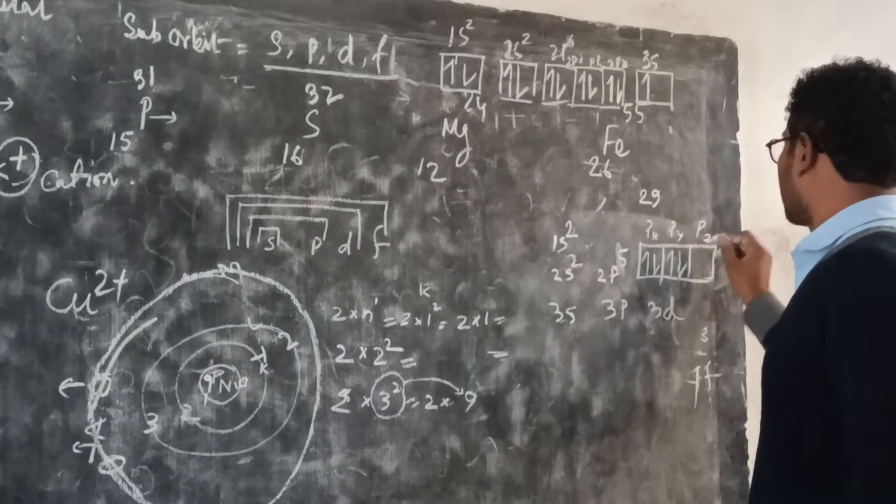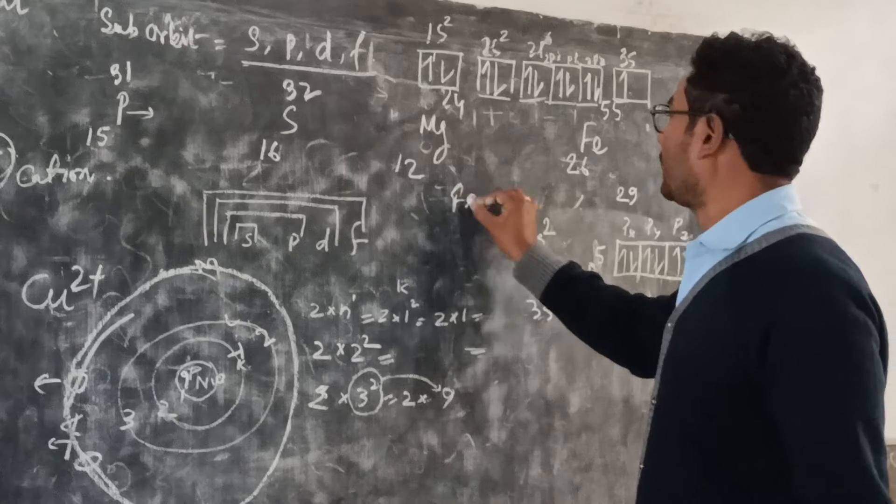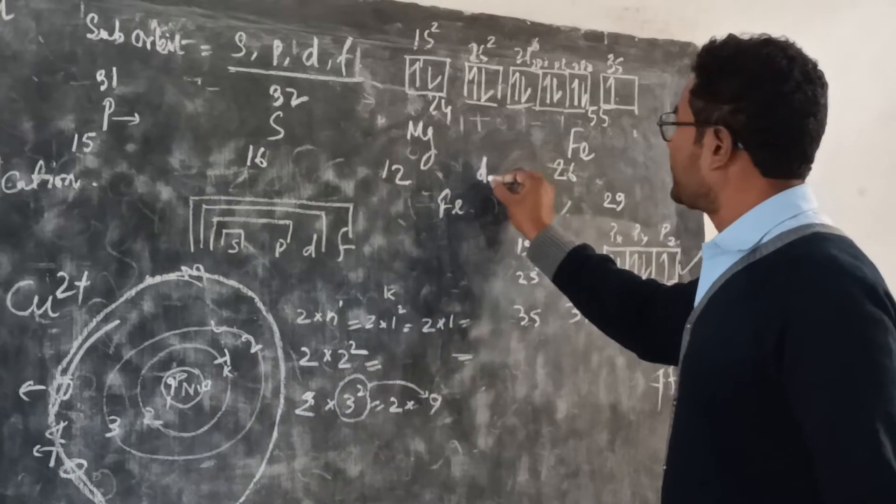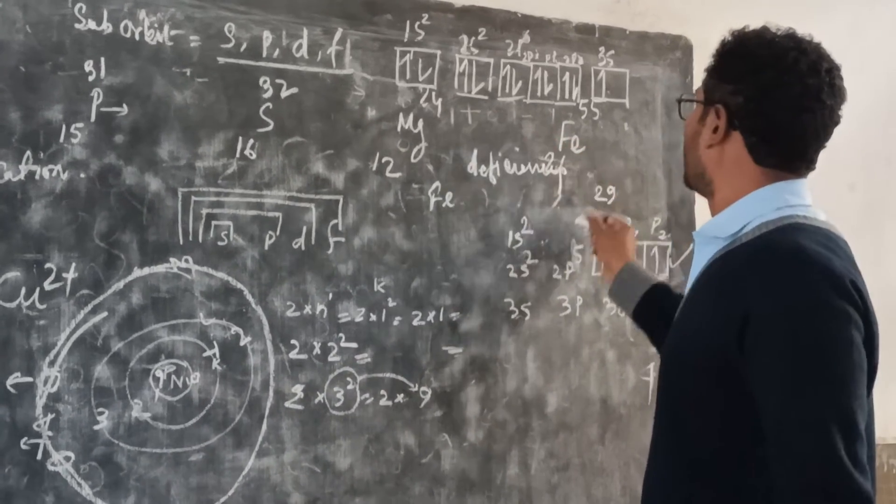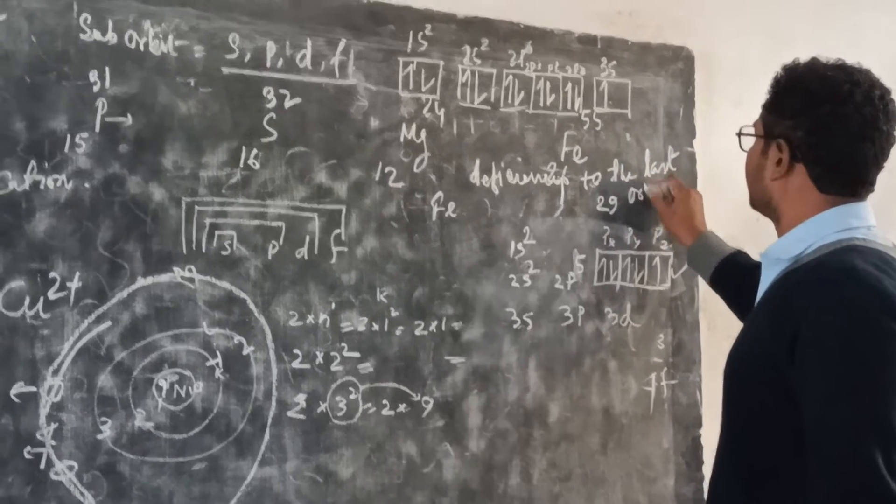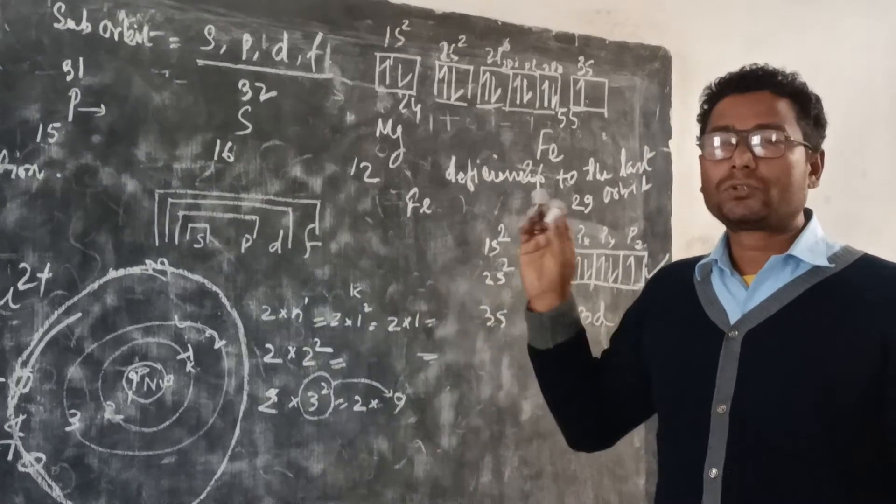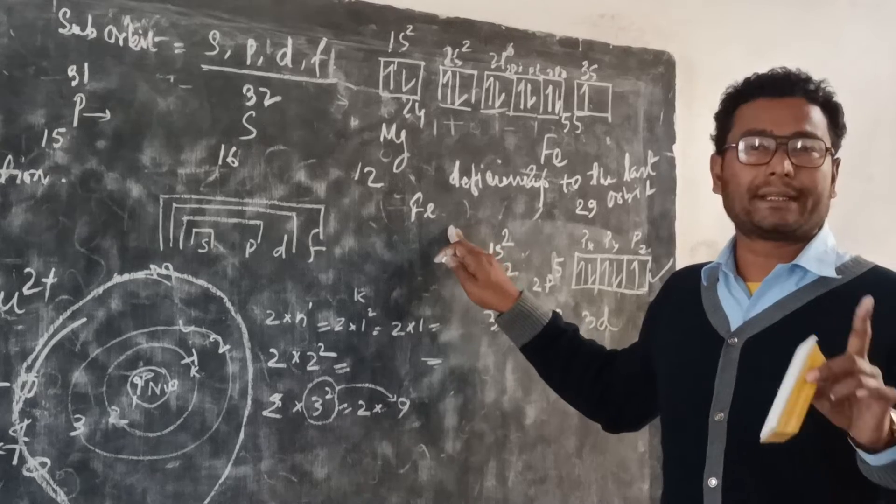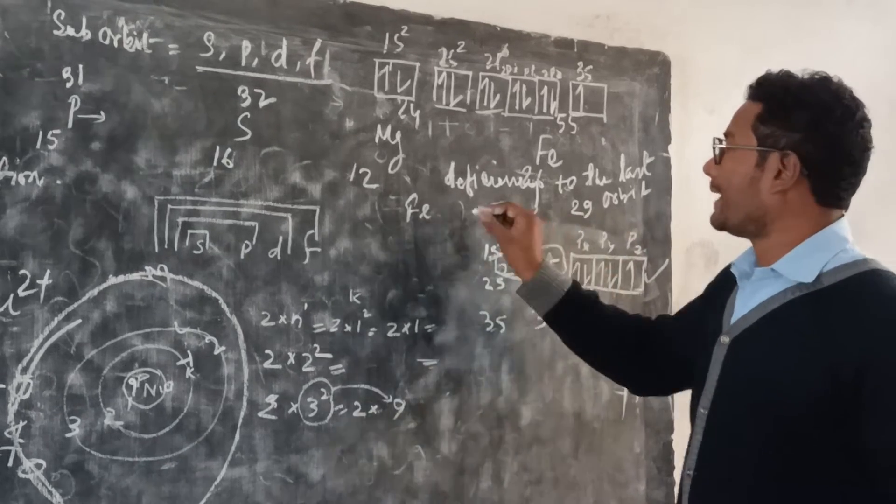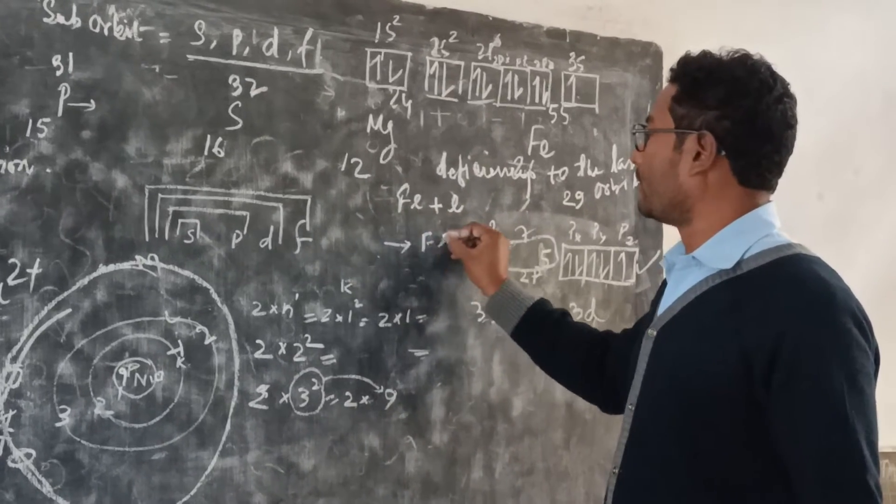If we see, there is a deficiency in the last orbit. The rule says to get two or eight electrons to be stable. After gaining electrons, it becomes negatively charged.